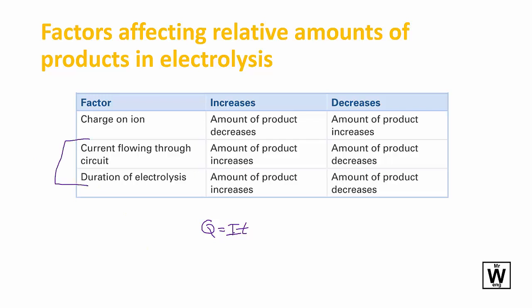These two factors are fairly easy: if you put more current through or leave it for longer, you're increasing the amount of charge going through, so you'll get more product. If you decrease it, you'll get less product.